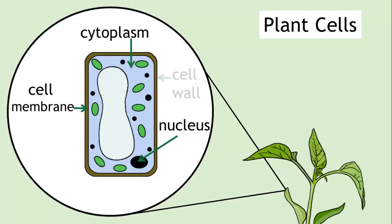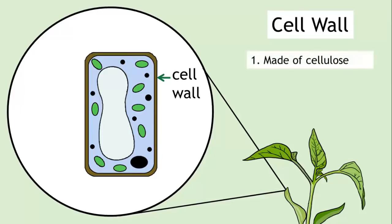For example, they contain a cell wall. A cell wall is made of cellulose, and this structure provides support for the shape of the cell.